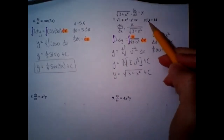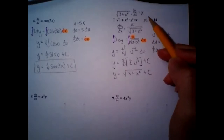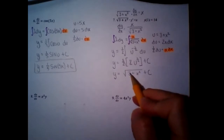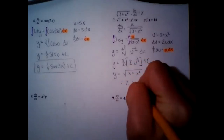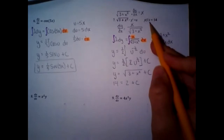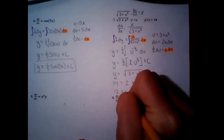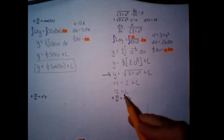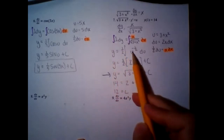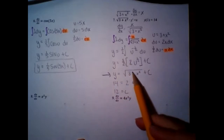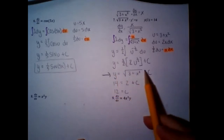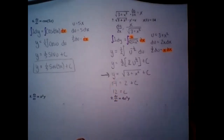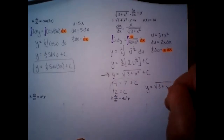Now the initial condition — and look, this one doesn't start at zero. We plug in 1 for x and 14 for y. If x is 1, then 1² + 3 = 4, square root of that is 2. And y is 14. So 14 = 2 + C, meaning C = 12. Go back to the step right before you plugged in for C and rewrite it exactly, except instead of plus C put plus 12. Our final answer is y = √(3 + x²) + 12.